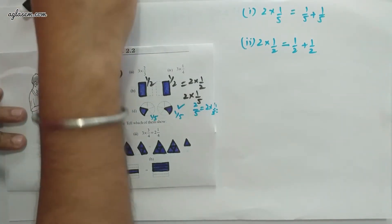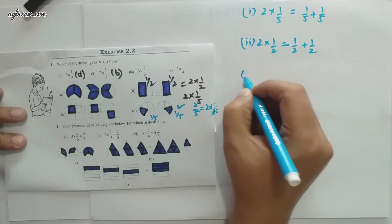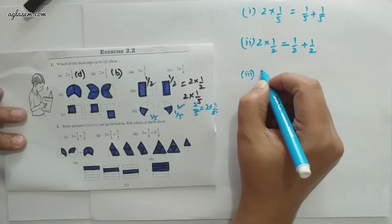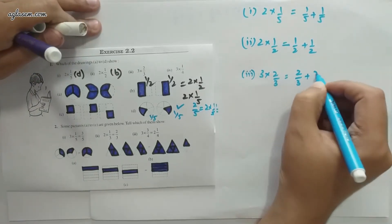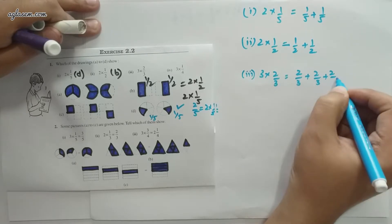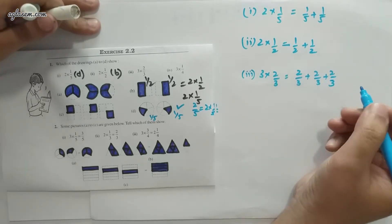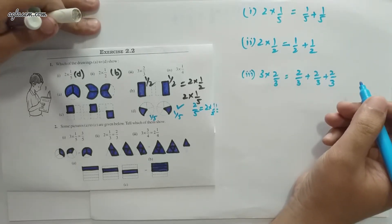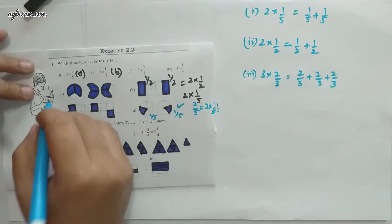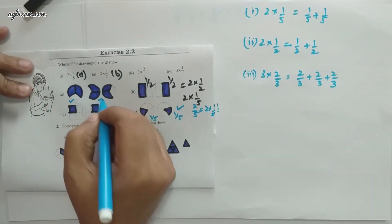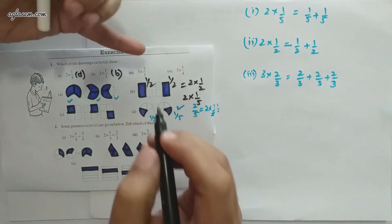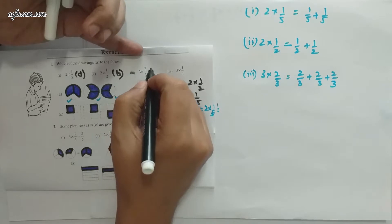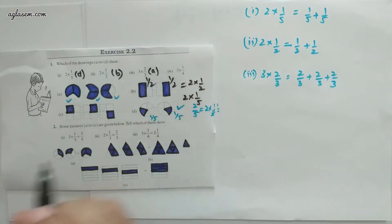For 3×(2/3): that means 2/3 + 2/3 + 2/3. Can you see anything like this? Yes — the parts show 2/3, 2/3, 2/3. So the answer to the third part is figure a.